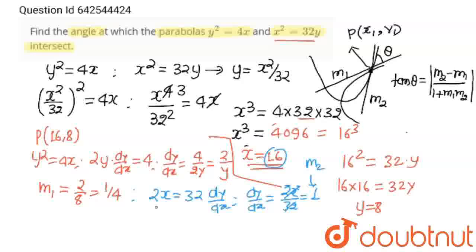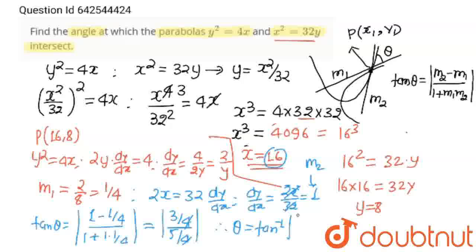And when I will use this formula, we'll get tan θ=mod(m₂-m₁)/(1+m₁m₂). So let us suppose (1-1/4)/(1+1×1/4). And here we'll get (1-1/4) will be 3/4 and (1+1/4) is 5/4. Both 4s will cancel out. And θ will be equal to tan⁻¹(3/5). Answer.